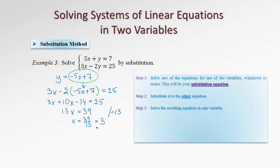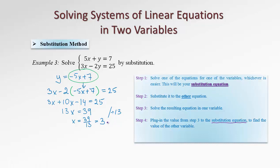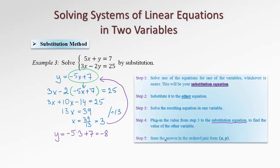So we have half the question done — we have the value of x. The next step is to use this value and plug in to the substitution equation from step 1. We plug x equals 3 into this equation to find y. y equals negative 5 times 3, plus 7. So it's negative 15 plus 7, which gives negative 8. We have both values, so the last step is to state the answer as an ordered pair. Our answer is the ordered pair (3, −8), which is the solution of our system of equations.